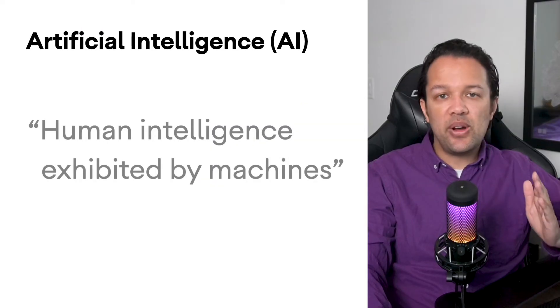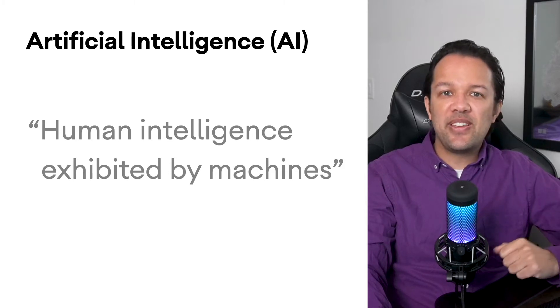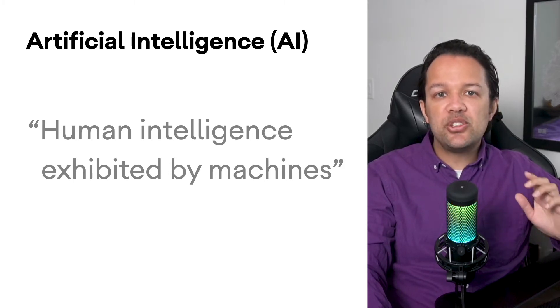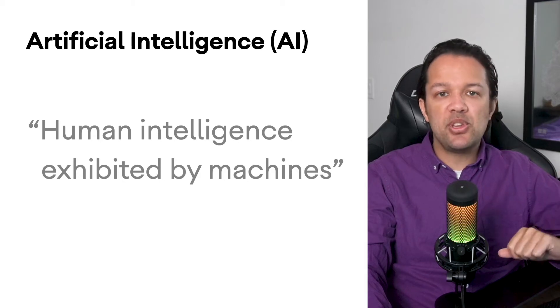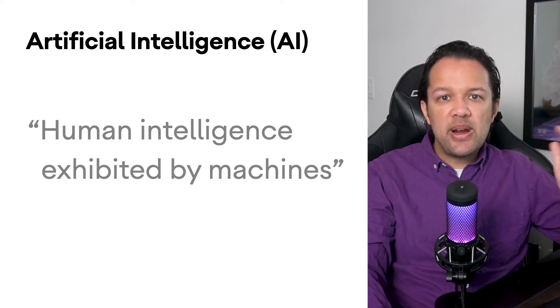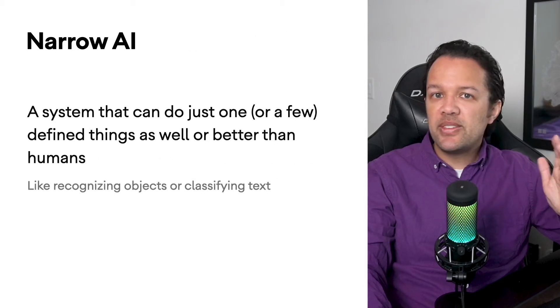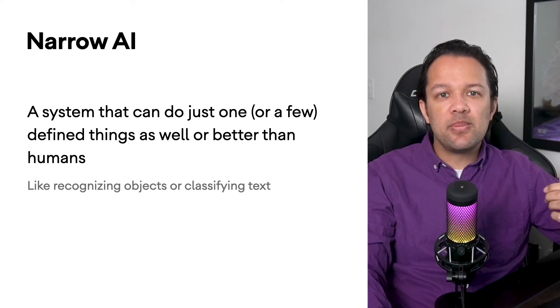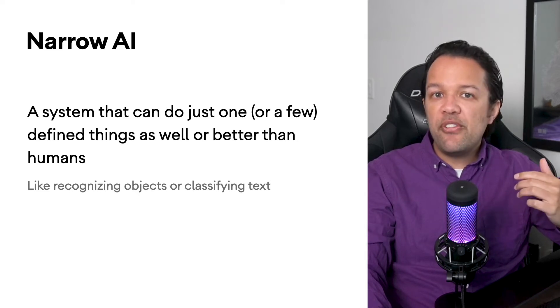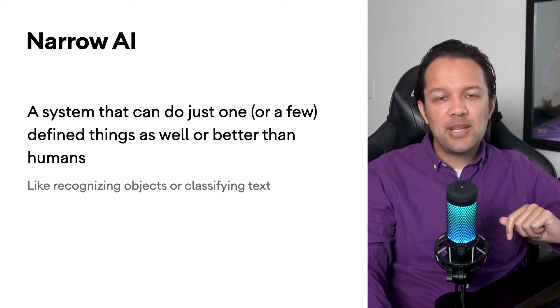You may have heard a number of terms related to this field of study, things like artificial intelligence, machine learning, or even deep learning. Artificial intelligence, or AI for short, is essentially the science of making things smart. More formally, it can be defined as human intelligence exhibited by machines. But this is a very broad term, and right now we're actually creating systems that are a form of narrow AI — a system that can do one, or maybe a few things, as well or better than a human expert for that task.